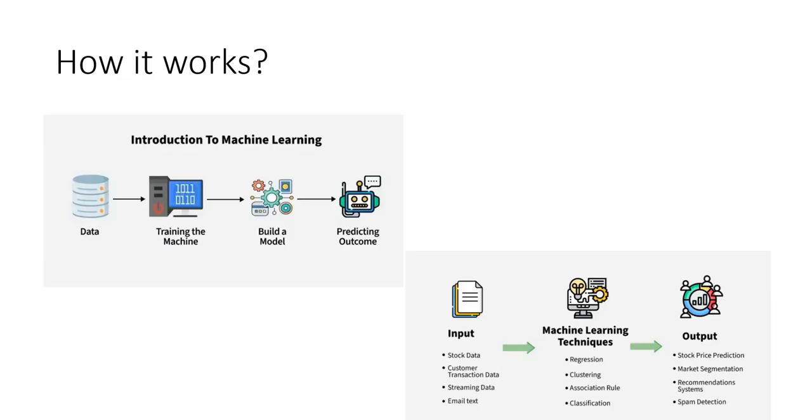Now, let's break it down step by step. Step number one: data, that is the starting point. Everything begins with the data. This data can be anything—numbers, images, text, medical reports, stock prices, emails, or customer transaction data. You can imagine data as the fuel that powers machine learning.